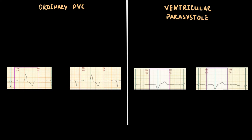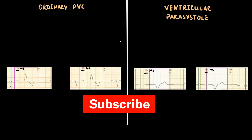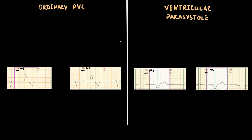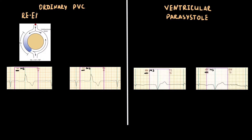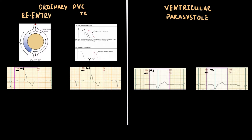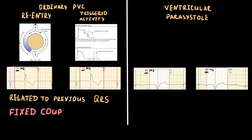How can we distinguish an ordinary premature ventricular contraction from ventricular parasystole? First, we need to measure the coupling interval — the distance from the normal QRS to the QRS of the premature contraction. In ordinary premature ventricular contraction, the coupling intervals are 568 ms and 552 ms, respectively — a very small difference. The coupling interval is fixed and constant because the most common mechanisms of ordinary PVCs are re-entry and triggered activity, both of which are related to the previous normal contraction, making coupling intervals stable.